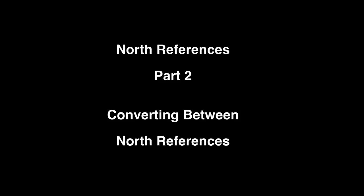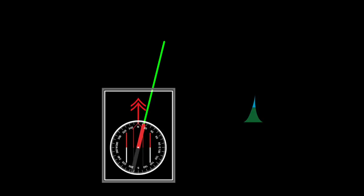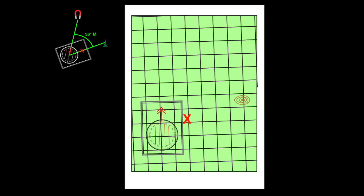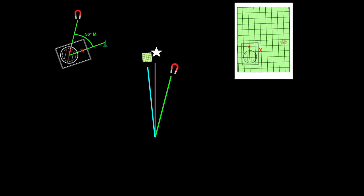Sometimes you need to convert from one north reference to another. In this example, we sight a magnetic bearing with our compass and get a bearing of 56 degrees magnetic. We'd like to plot that bearing onto our map, which has lots of grid lines printed on it, but to plot using the grid lines, we need to convert the bearing to grid north.